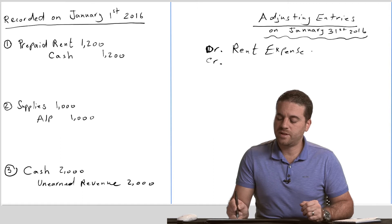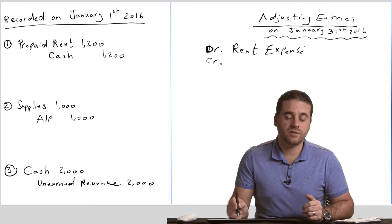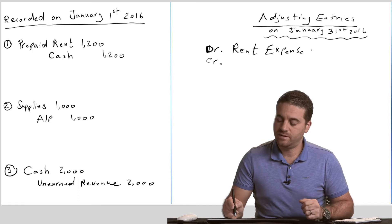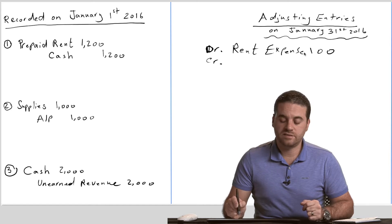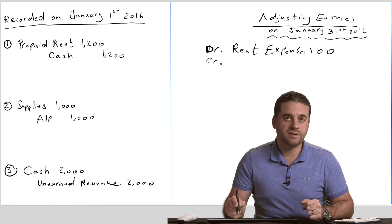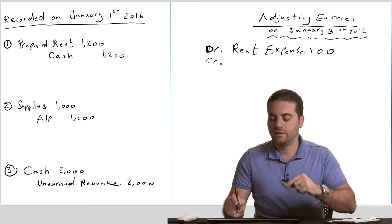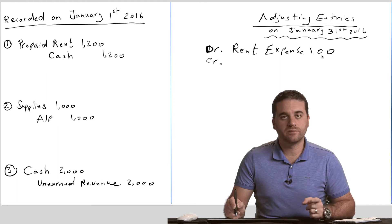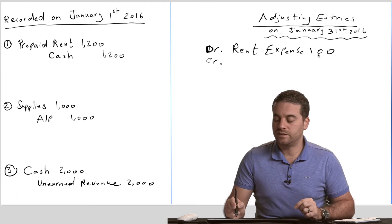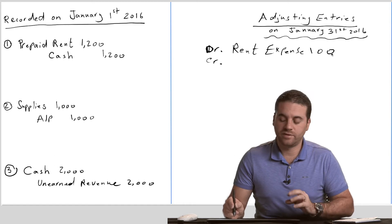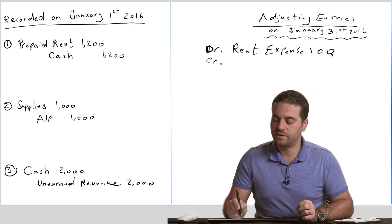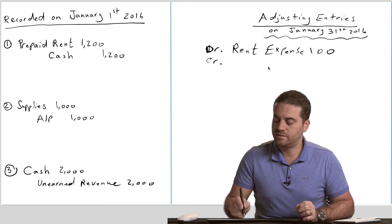Expenses always increase with a debit, so that expense is increasing by $100. An expense account is not an asset — it's an income statement account, which I'll show you in Chapter 4 when we prepare the income statement, which will have all the revenues and expenses. So it's an expense account that goes to the income statement.